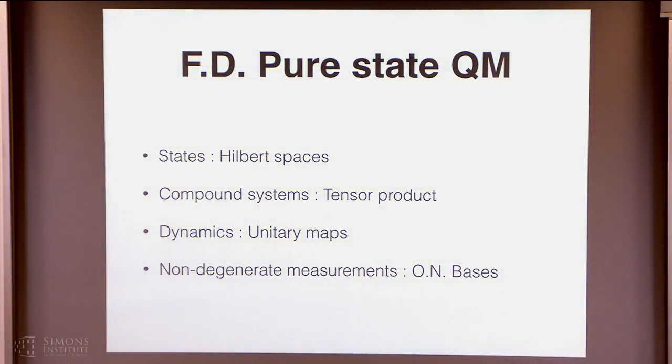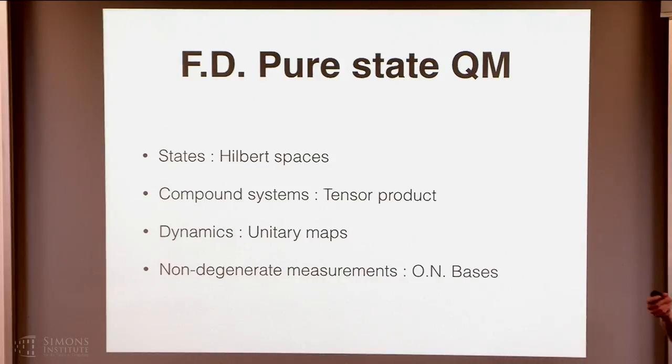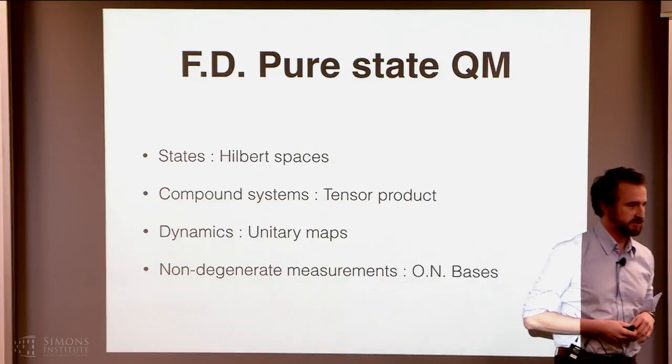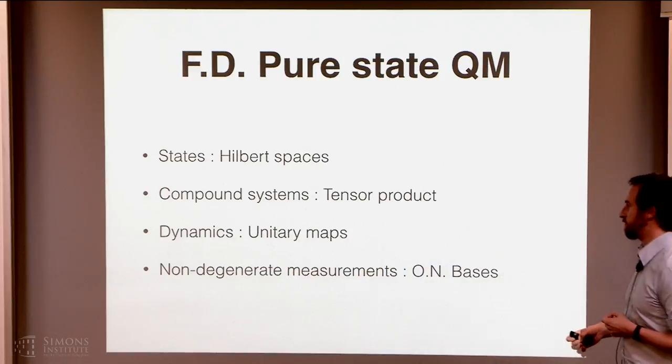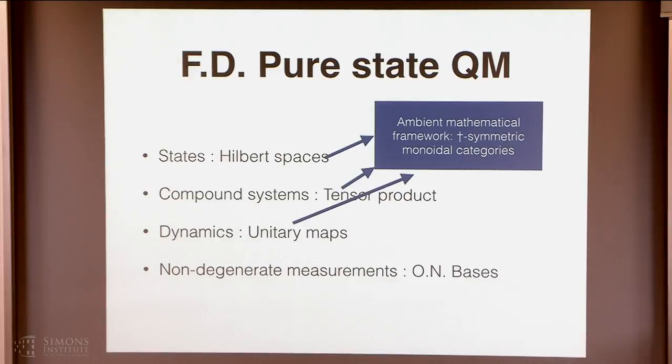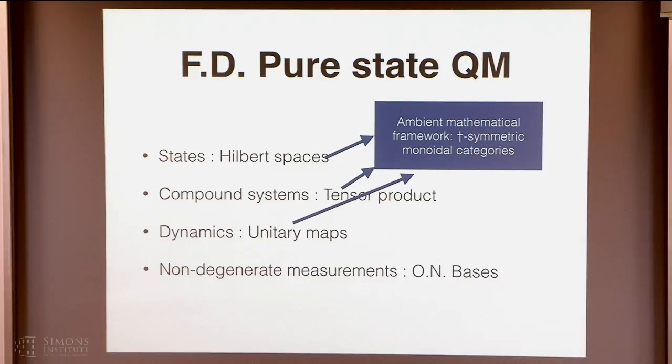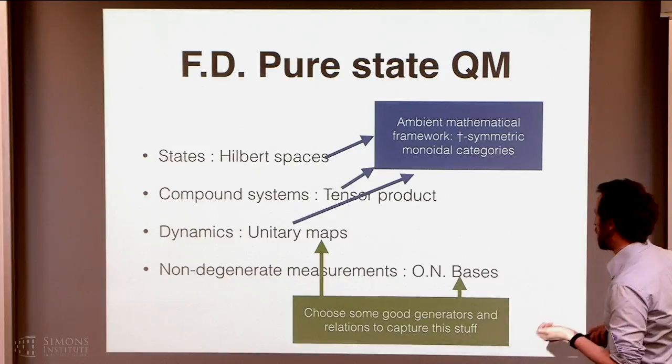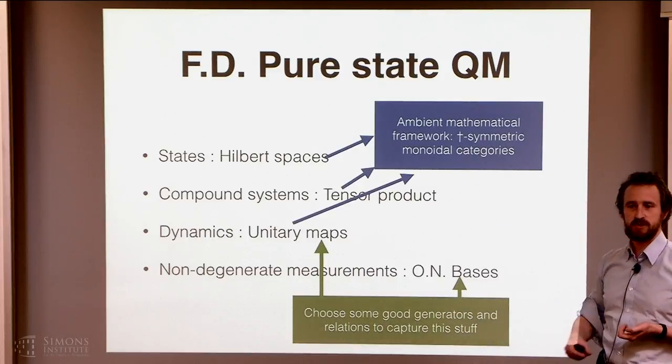So, quantum mechanics for me means finite dimensional pure states. Everything I'm saying here can be generalized to mixed states by means of the CPM construction due to Peter Selinger. I'm not going to talk about that whatsoever. So, what do we have in this world? We've got some kind of state spaces which would be Hilbert spaces. We've got this idea that we're going to combine systems with the tensor product. We have some dynamics which would be typically unitary maps. And, important for my story, this idea of non-degenerate measurements which are mathematically the same thing as orthonormal bases of our spaces. So, if I look at all these things, that's just saying, I want to work in some symmetric monoidal category. I'm sorry, dagger symmetric. I need the dagger so I can talk about unitarity. And for free, it will also give me an inner product. But all the rest of the stuff, I actually have to put in, right?